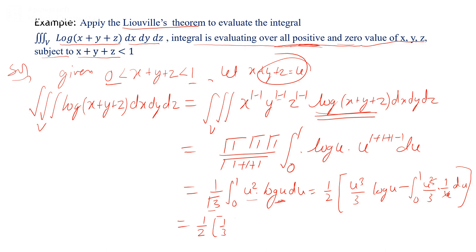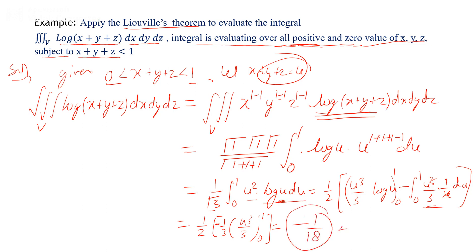Evaluating by integration by parts: (1/2)[u³/3 * log(u) - integral of (u³/3)(1/u) du] from 0 to 1. Applying the limits from 0 to 1, the first term vanishes, giving (1/2) * [-(1/3)(u³/3)] from 0 to 1 = (1/2)*(-1/9) = -1/18. So by the Liouville extension of the Dirichlet theorem, the final answer is -1/18.